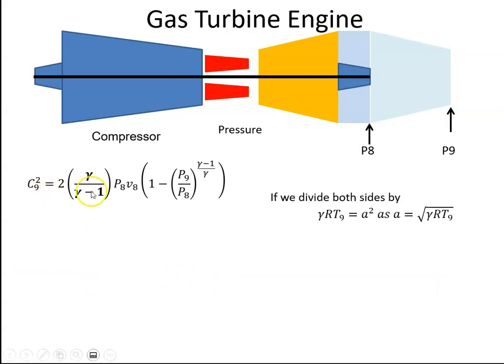We're going to divide both sides by gamma RT9, which is the speed of sound, and put that in so we have the speed of sound squared on both sides.